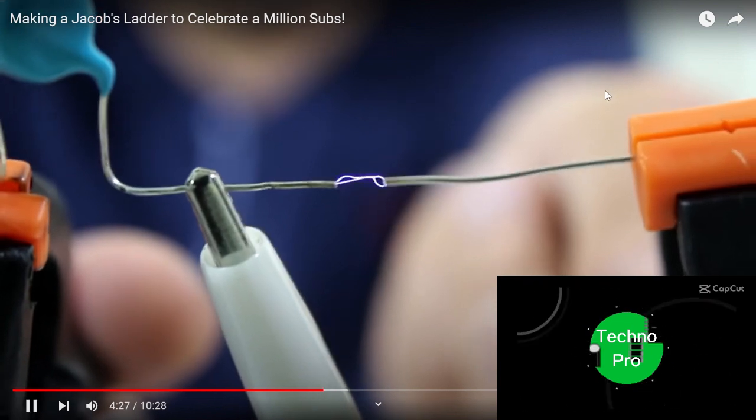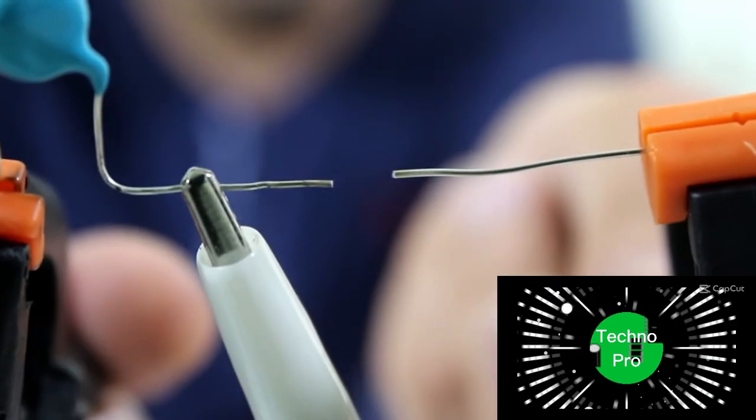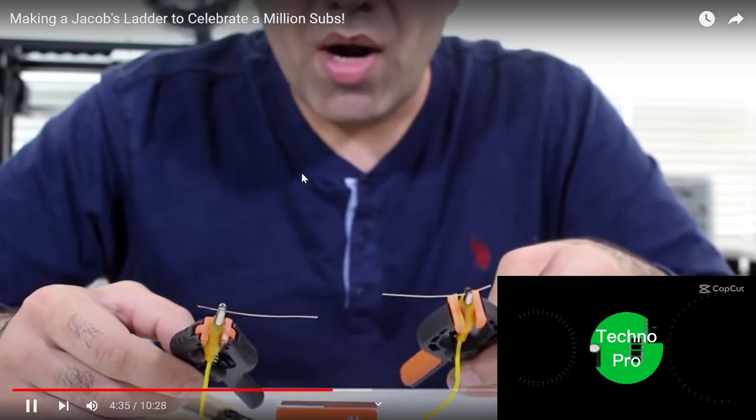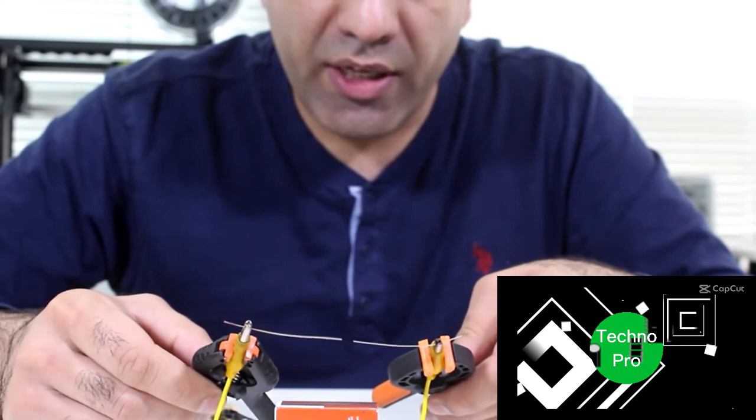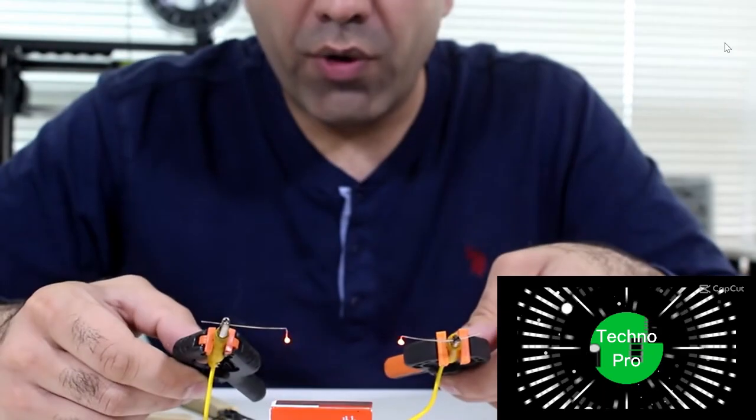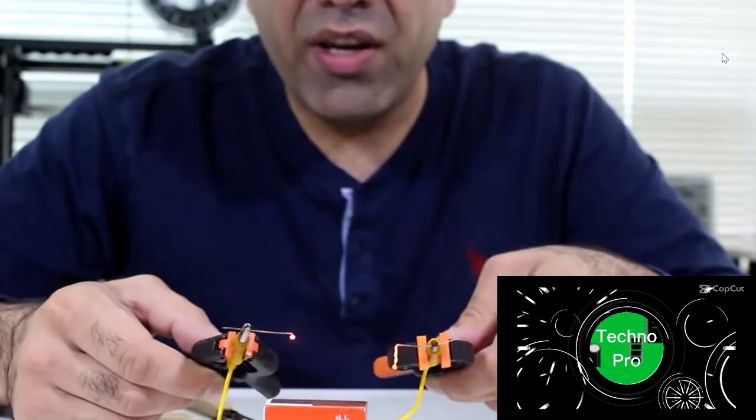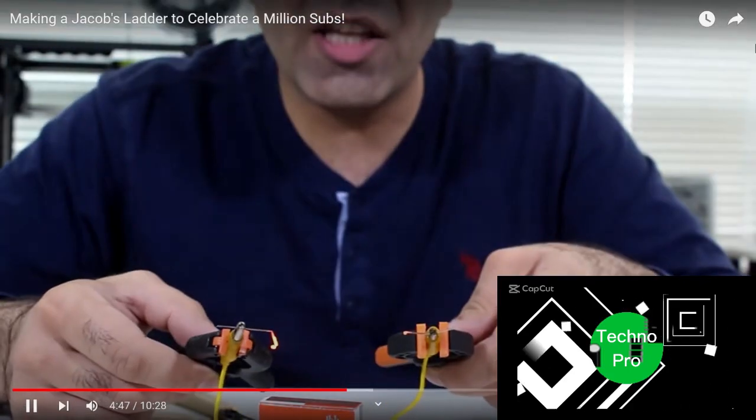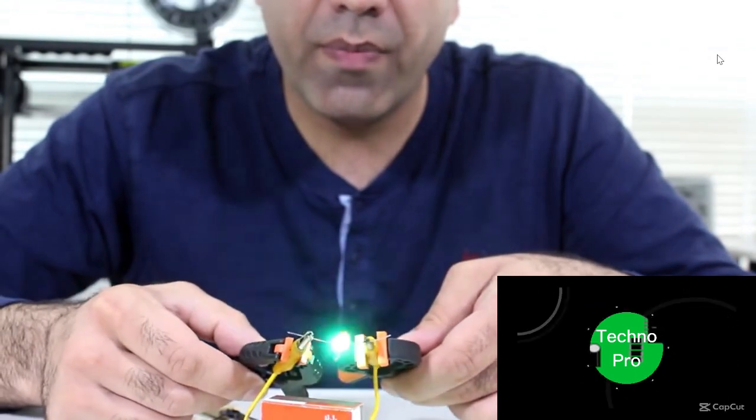This is too weak for Jacob's ladder though, because as soon as I open the gap, it stops going. We need more power to be able to stretch the arcs. See? Wow, look. For a wider arc, we need more power to create and maintain a longer ionized air channel.